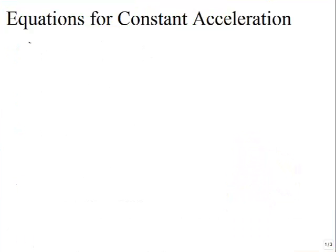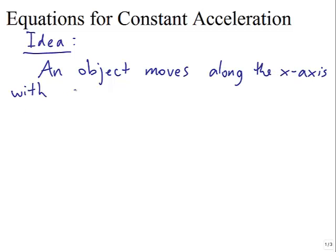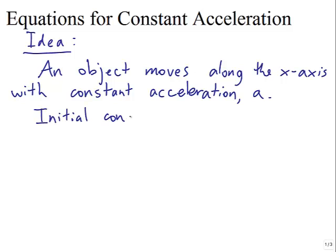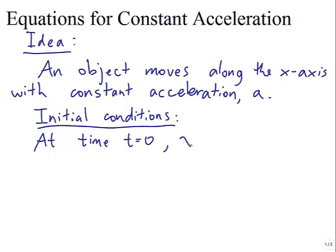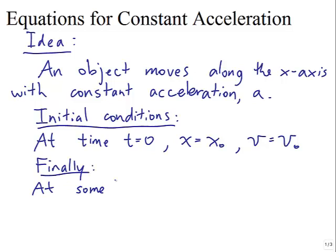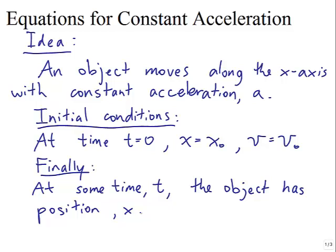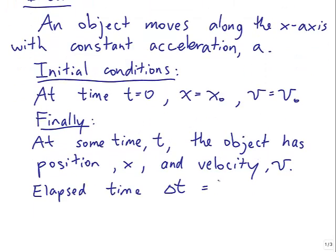Equations for constant acceleration. The idea is that you have an object moving along the x-axis with some constant acceleration a. The initial conditions are that at time t equals 0, x equals x-sub-0, and v equals v-sub-0. At some later time t, the object has position x and velocity v. The elapsed time delta-t is just t.